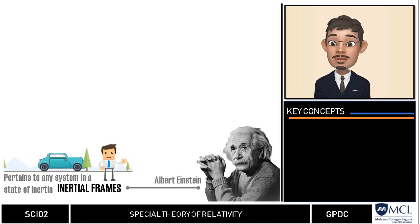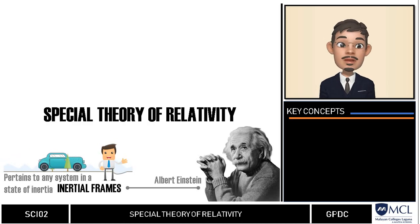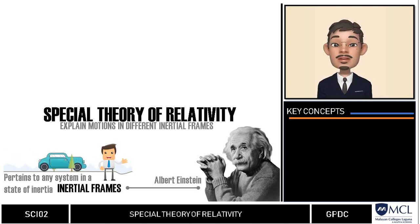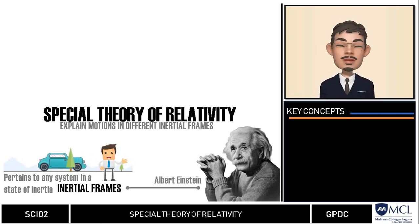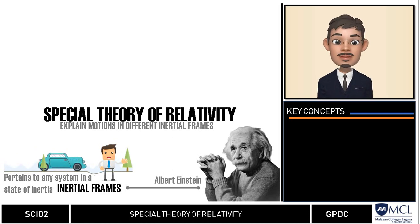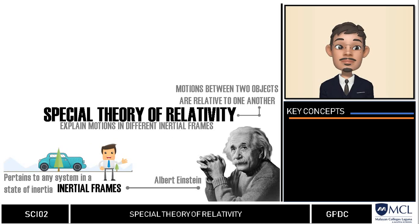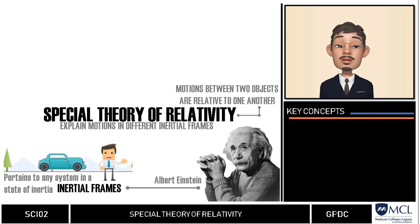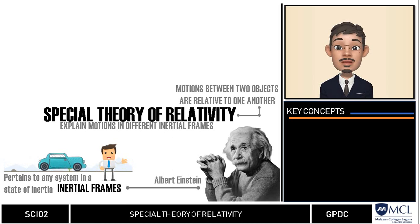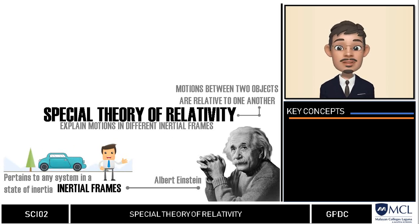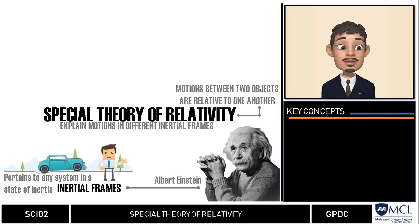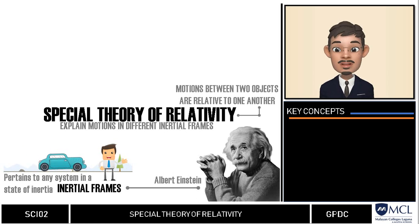Einstein, in 1905, published his theory of special relativity to explain how motions can be compared in different inertial frames. In this theory, Einstein used the word 'relative' to refer to the motions between two objects relative to one another. How fast one object moves with respect to the other is the central idea of this theory. Many people have heard of this theory and most often associate it with complex modern physics concepts.